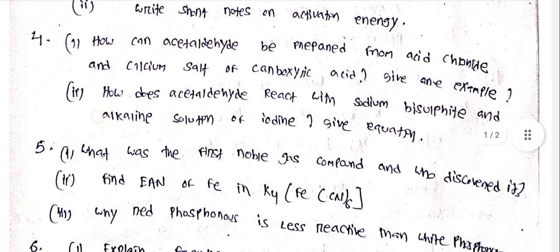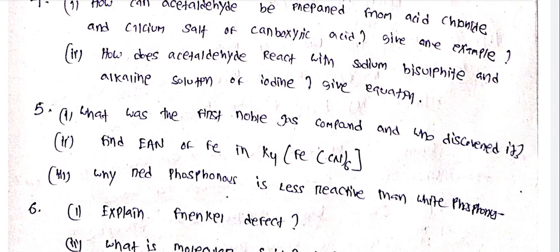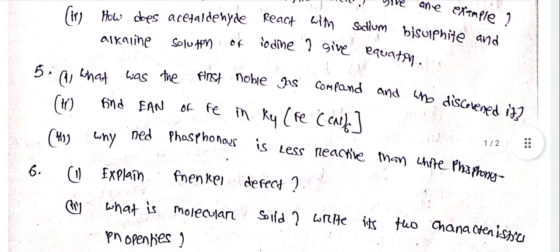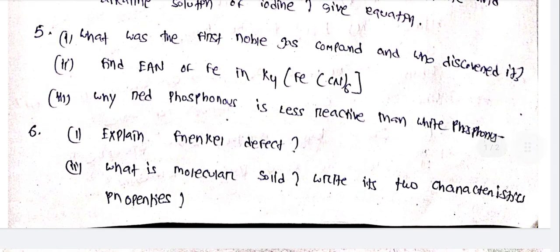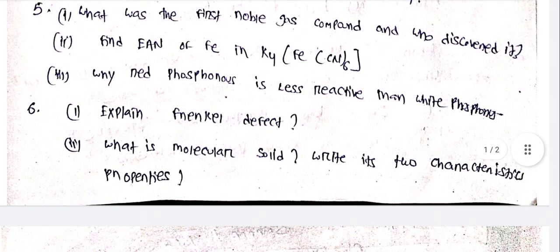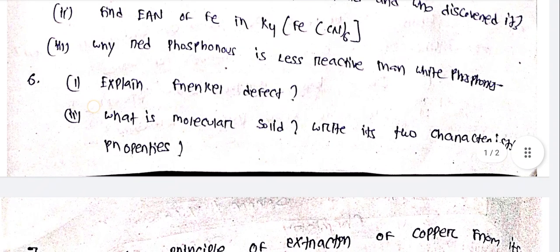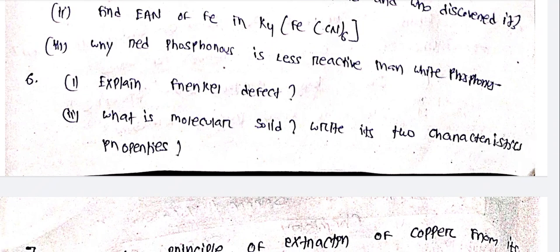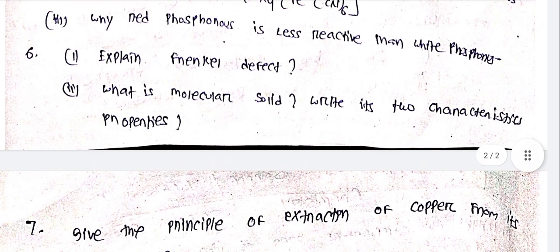Give one example. How does acetaldehyde react with sodium bisulfite and alkaline solution of iodine? What was the first noble gas compound and who discovered it? Find N of Fe in K4Fe(CN)6. Why red phosphorus is less reactive than white phosphorus? Explain Frenkel defect.